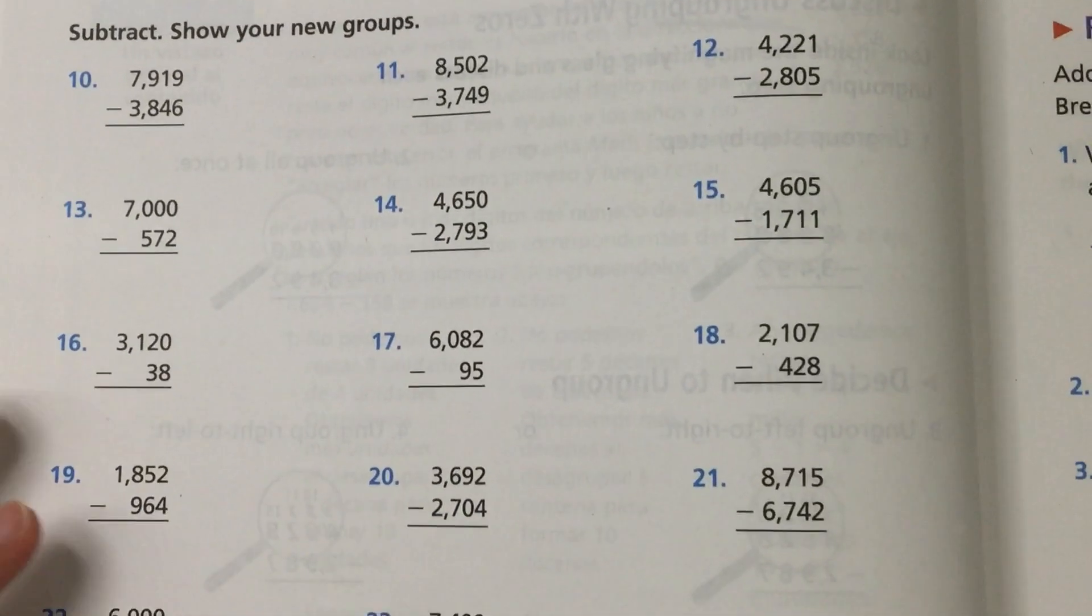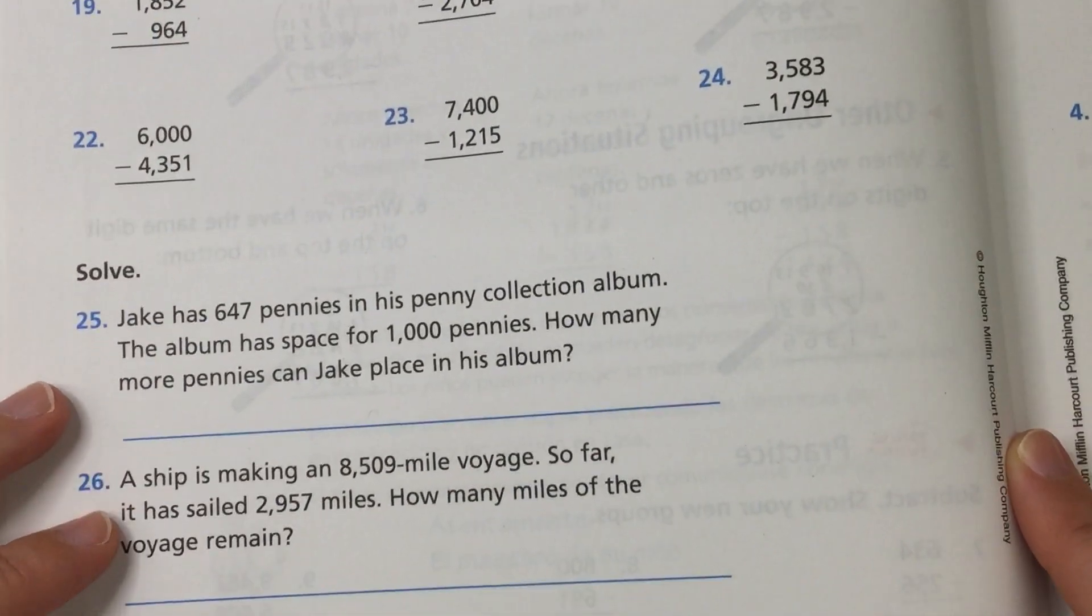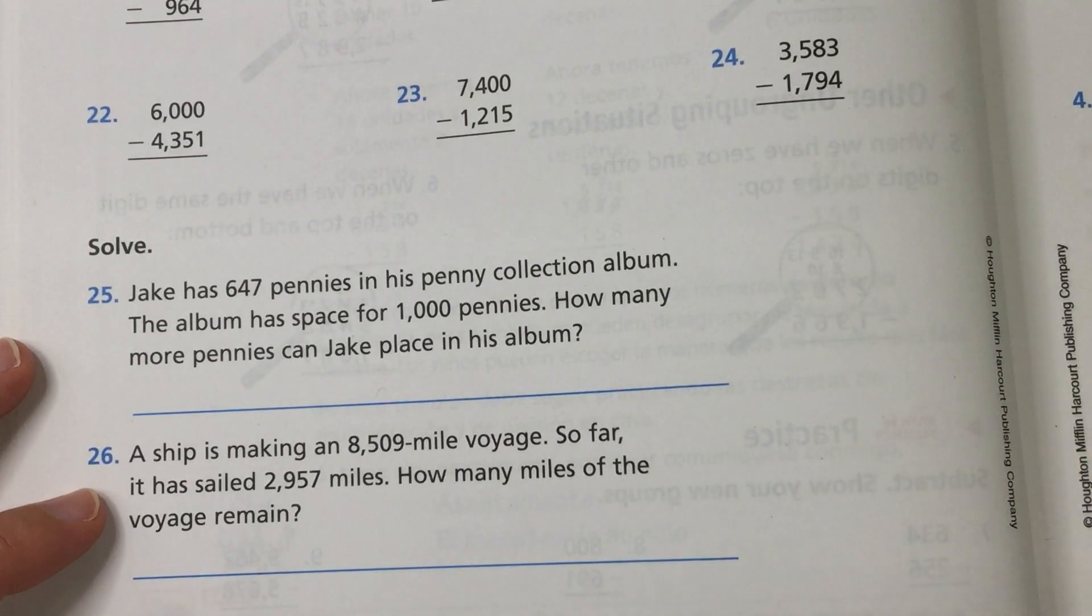How many did I say? I think 4 right? So do 4 in this section and then make sure you do both of the word problems. Make sure that you are answering the question fully and putting in a label. Let me know if you have any questions.